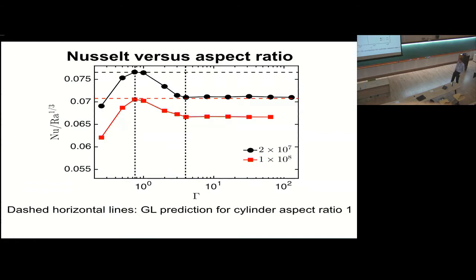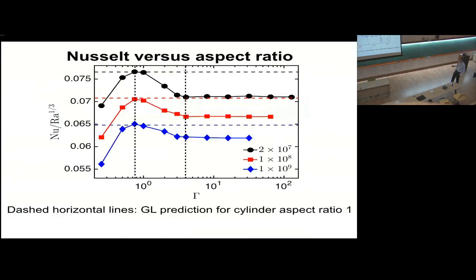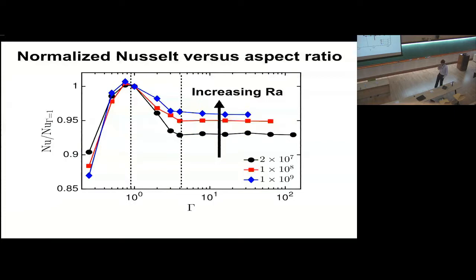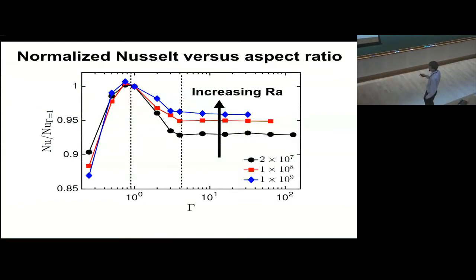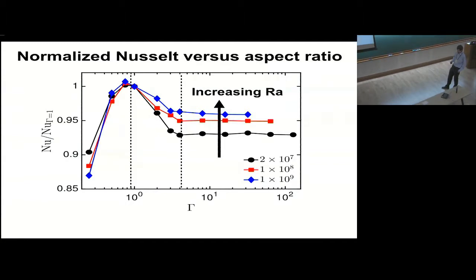We see similar behavior for the different Rayleigh numbers — the GL prediction is exactly recovered at the peak value for both lower and higher Rayleigh numbers, with slightly different plateau regions. If we normalize the Nusselt number by its value at aspect ratio 1, we see how strong this effect is — the difference between the peak and the plateau. This becomes less pronounced at higher Rayleigh numbers: the higher the Rayleigh number, the smaller the drop towards the fully unconfined regime.